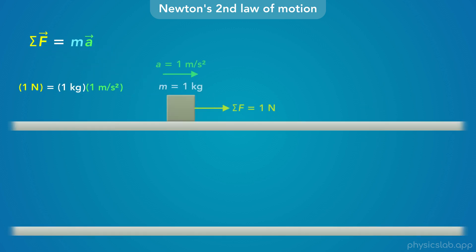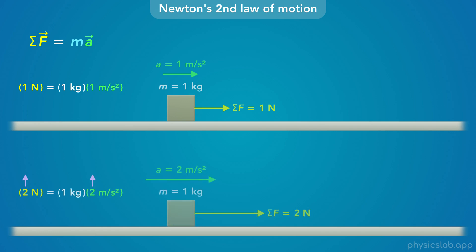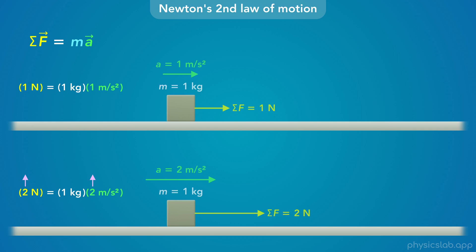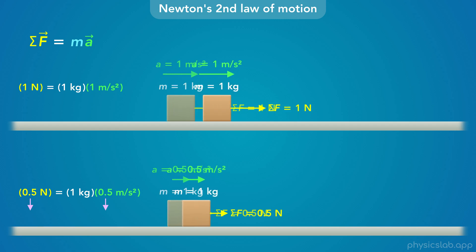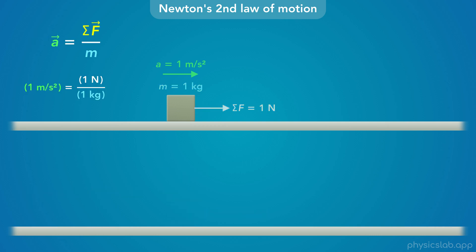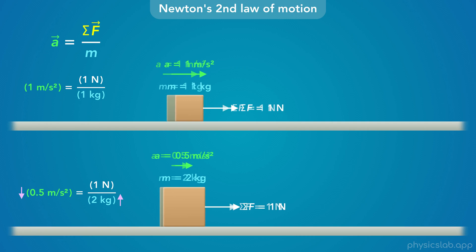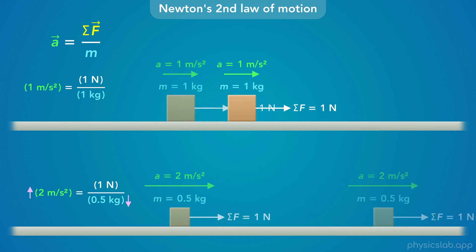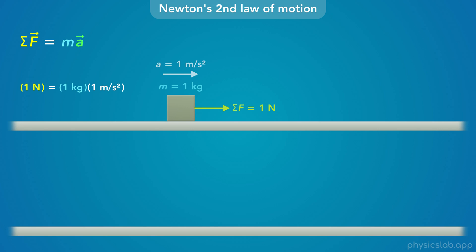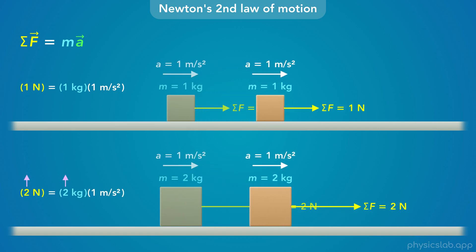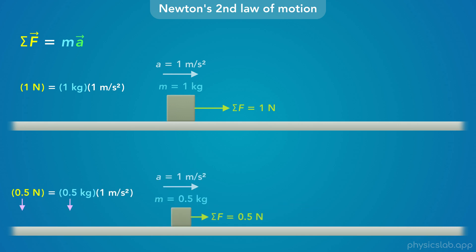Let's see this with numbers. A 1-newton net force on a 1 kg box gives 1 m/s² acceleration. If we keep the same mass but double the net force, we double the acceleration. Half the net force gives half the acceleration. If net force is the same but the object has twice the mass, it has half the acceleration; half the mass gives twice the acceleration. Keeping acceleration constant: twice the mass requires twice the net force, and half the mass requires only half the net force.